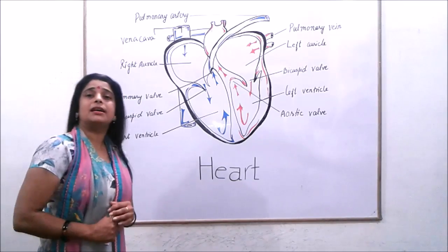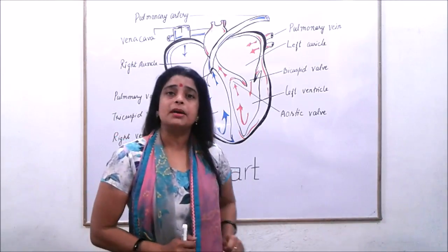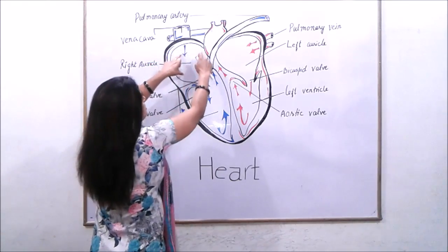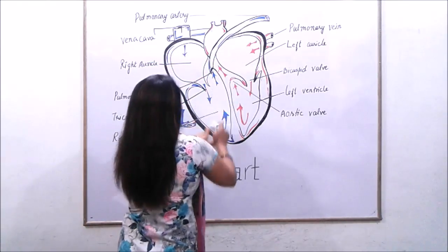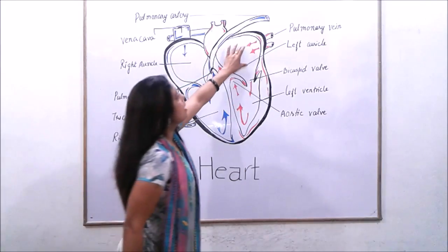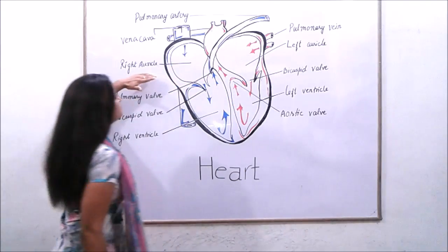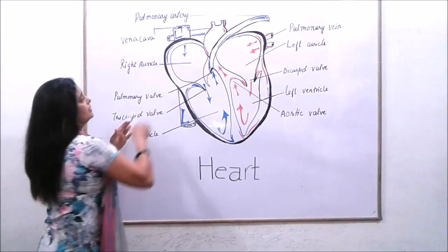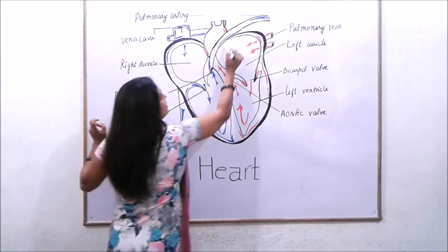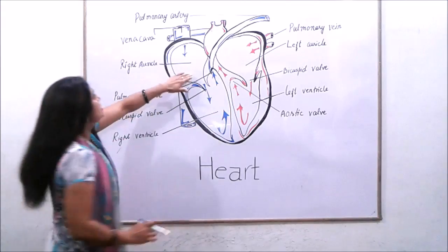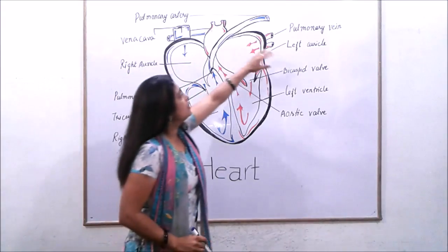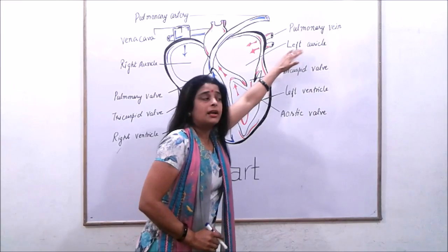The heart is divided into four chambers: two upper chambers and two lower chambers. The upper chambers are named auricles. The first one is the right auricle and the other one is the left auricle.